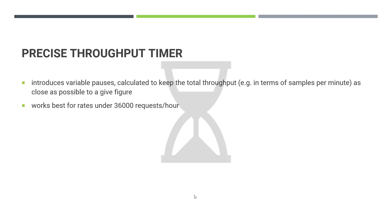The Precise Throughput Timer will introduce variable passes and help you keep the total throughput as close as possible to the target. It is similar to the Constant Throughput Timer, but the main difference is the variable passes — meaning the random delay. It is important to note it works best for less than 3600 requests per hour.